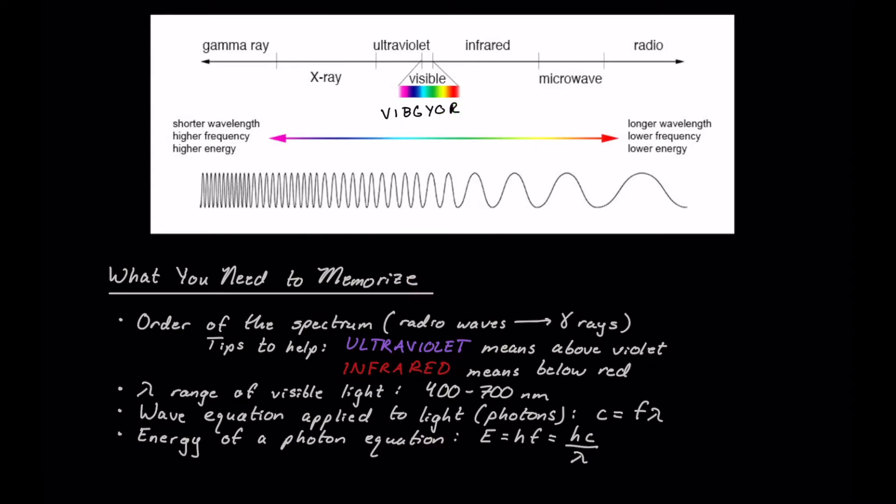Some more tips to help memorize this: ultraviolet means above violet, something you probably don't think about a lot, just hearing things like UV light in casual conversation. Infrared, so infra meaning below, infrared just means below red here.